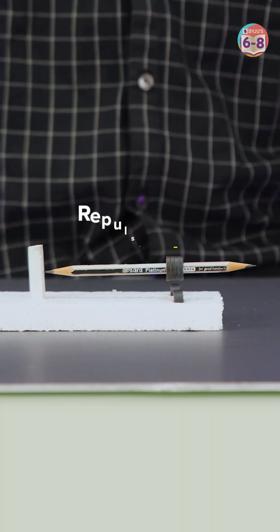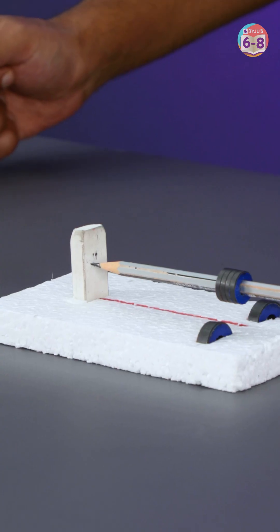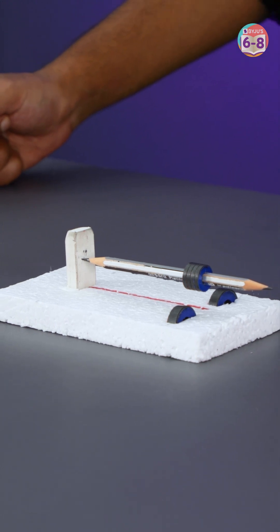The magnets in the board and the pencil are arranged this way. So the repulsive forces push the pencil upwards and the eraser at front stops the pencil from moving forward.